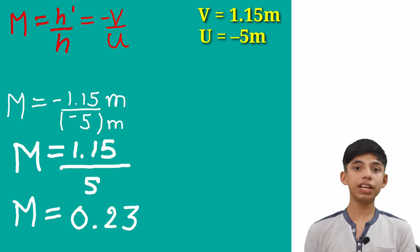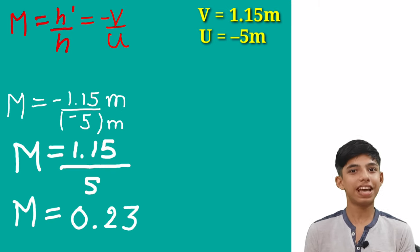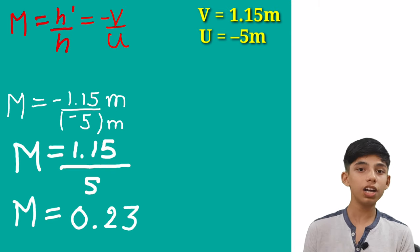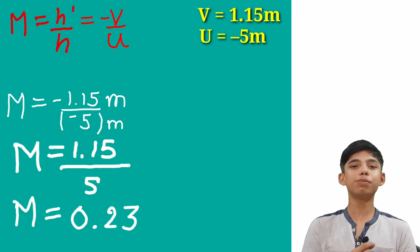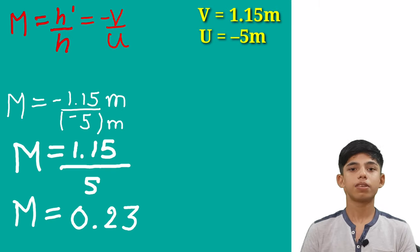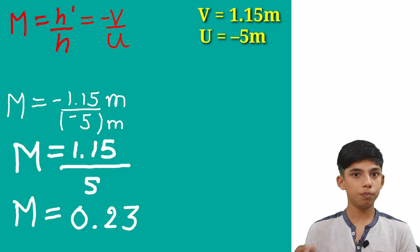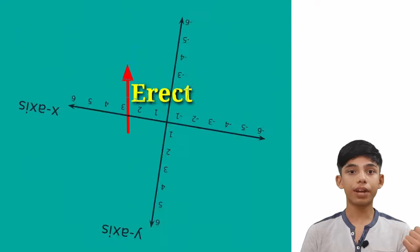So our magnification is less than 1. What does this mean? Yes, it simply means that our image is going to be smaller than the object. And we have already observed that convex mirror always forms a diminished image. So we can say that we are going in a right direction. And now this value is positive. So what does this mean? Yes, it means that our image is going to be erect.